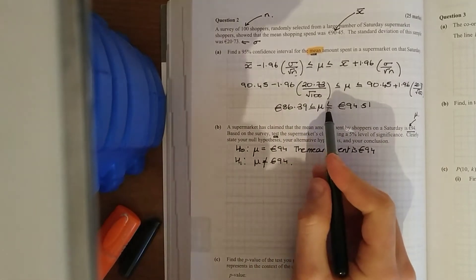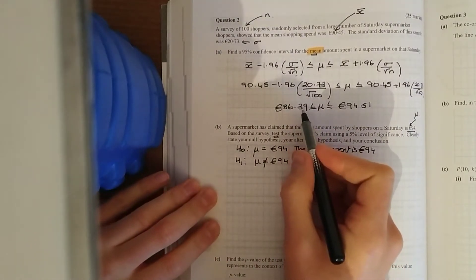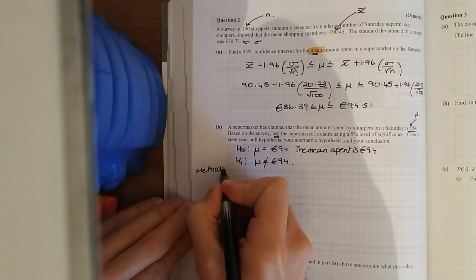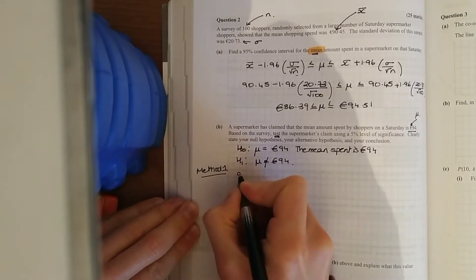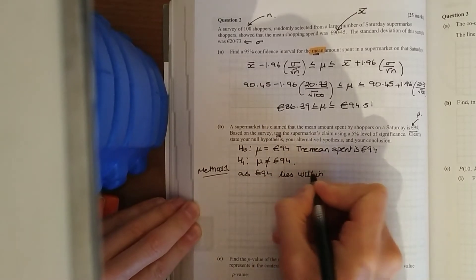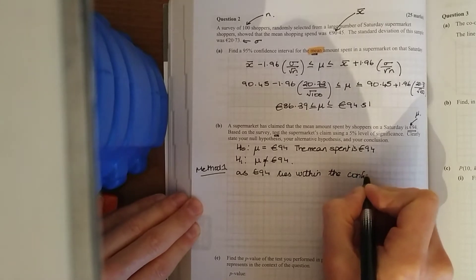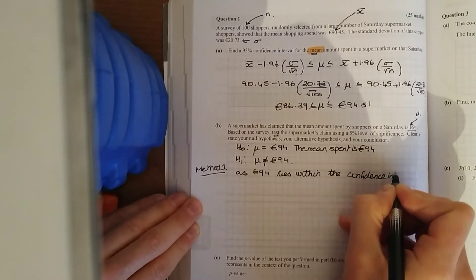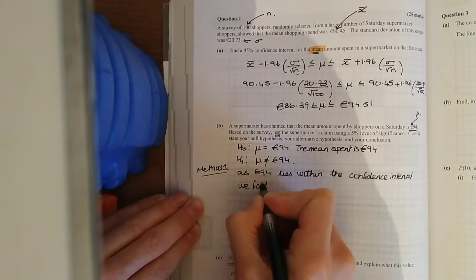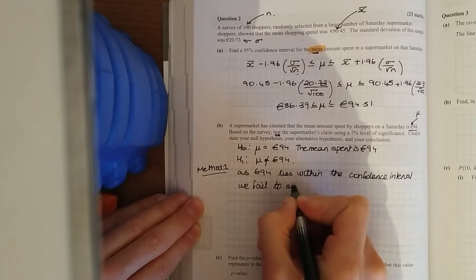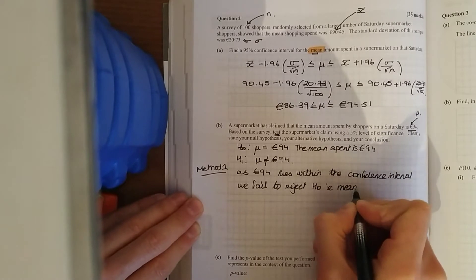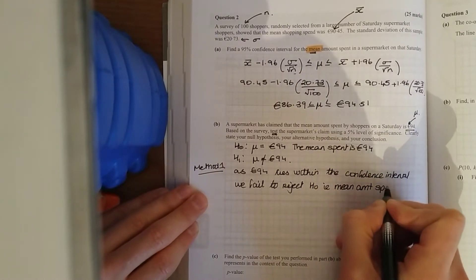Now you can just see from this here, you can use your answer from the first bit. As the 94 euro, so this is method one, I'll show you both ways. So I would do it generally a different way. As it lies within the confidence interval, as we can see in part one, it lies within that interval. We fail to reject null hypothesis. Mean amount spent is 94 euro.